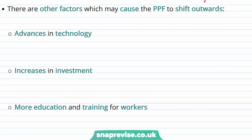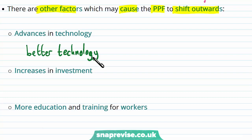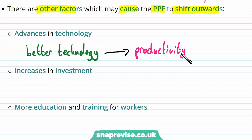There are other factors which may cause the PPF to shift outwards. Before, we assumed the state of technology was fixed, implying no advancement in technology. Now let's relax that and say there is better technology in the economy. If there is better technology, this could imply that productivity increases, which increases our efficiency — and therefore we can produce more goods with the same amount of resources.